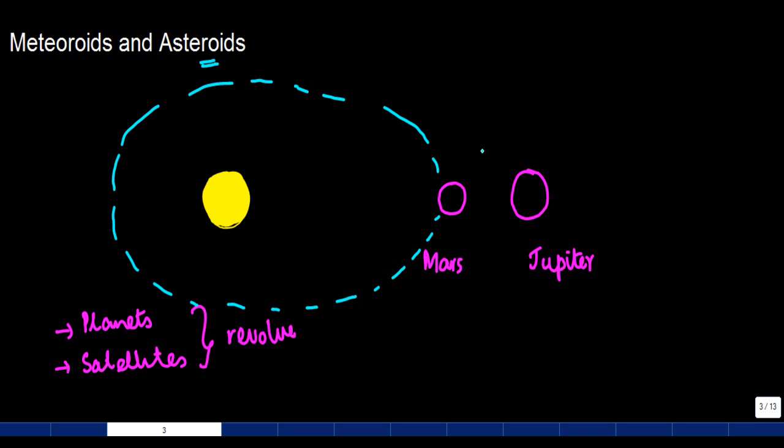These are certain bodies, mostly found between Mars and Jupiter. These are bodies which also rotate around the Sun. Just like these planets are rotating around the Sun, these are certain bodies